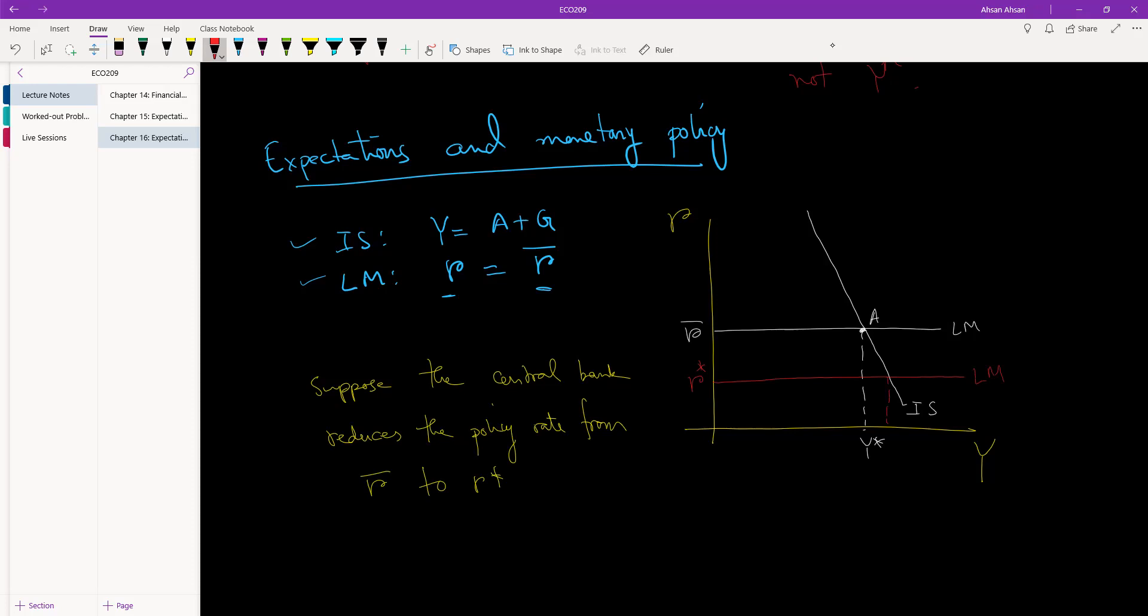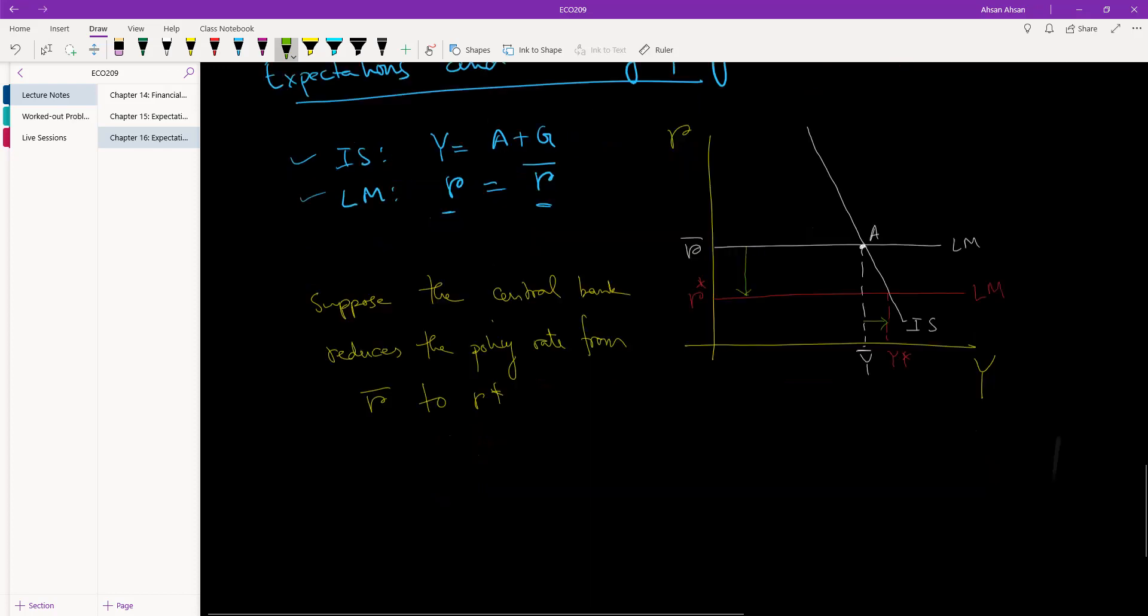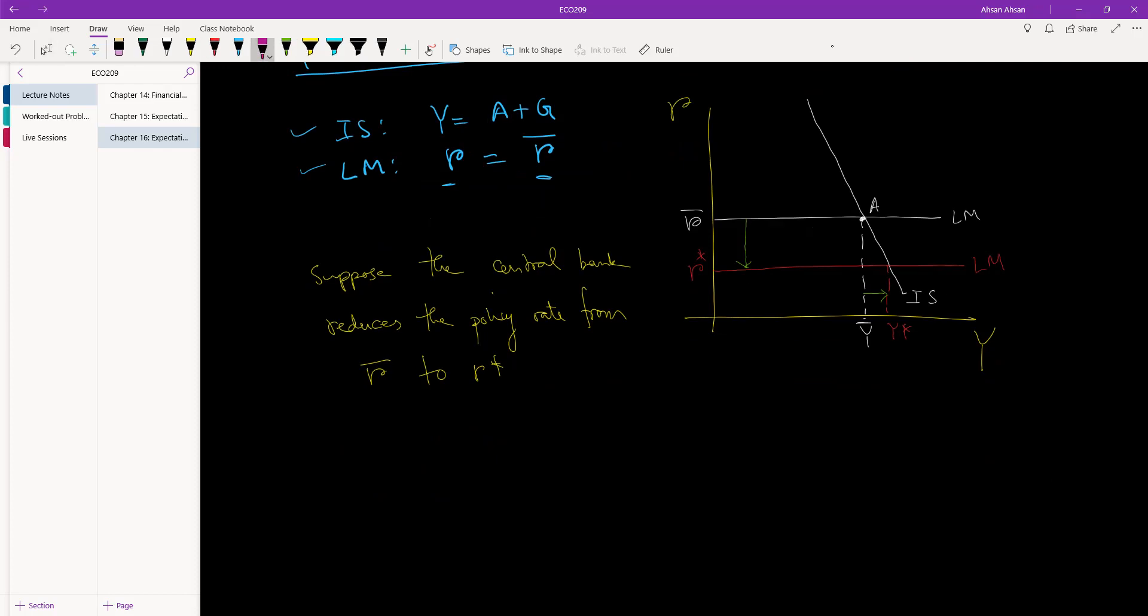Actually, let's call the old one Y bar, and so the new equilibrium is Y star. So you see what we have already talked about is that there was a relatively large fall in the policy rate but a much smaller rise. At first glance, what would look like when we introduce expectation into the mix, the strength of monetary policy is weakened.